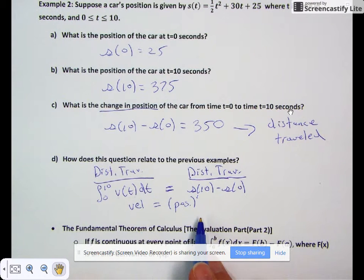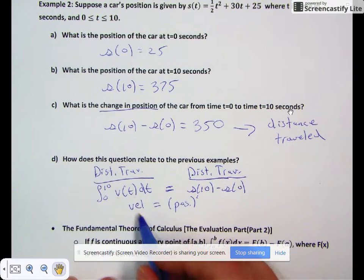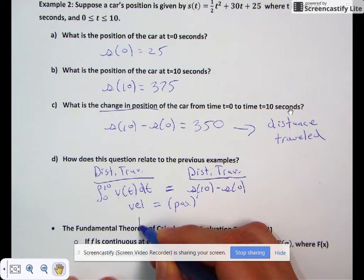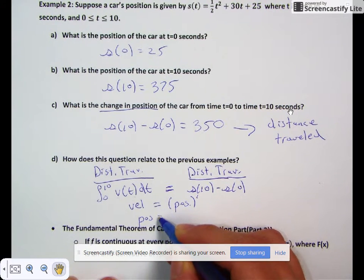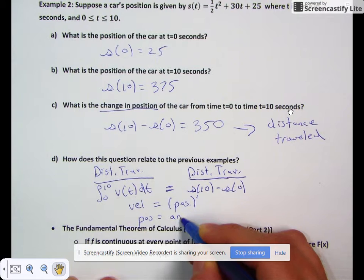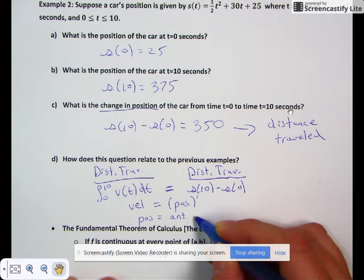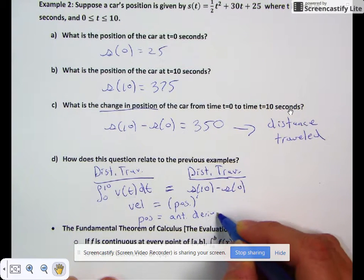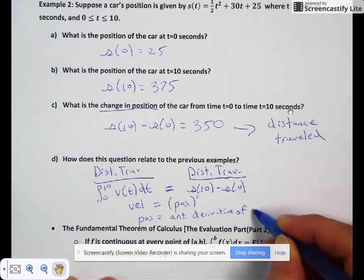What does this mean? Position is equal to the anti-derivative of velocity.